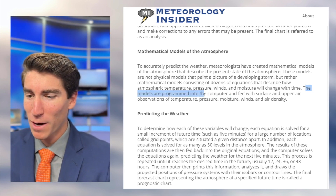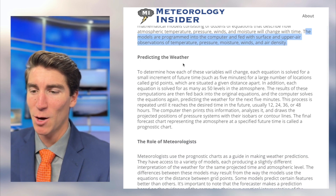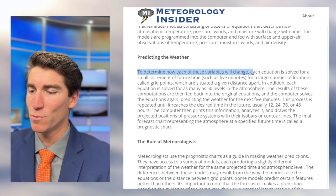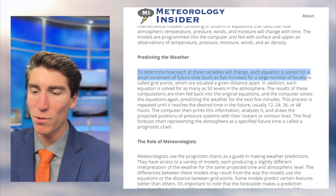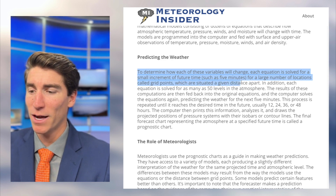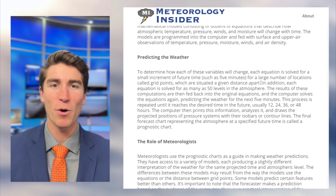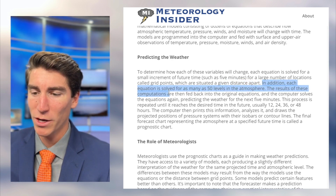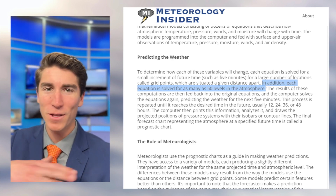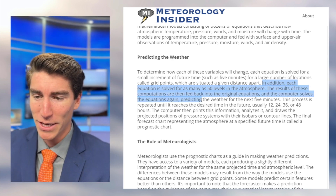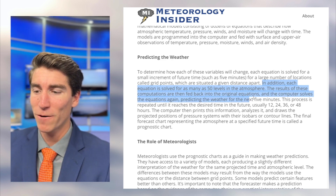The models are programmed into the computer and fed with surface and upper air observations of temperature, pressure, moisture, winds, and air density. To determine how each variable will change, each equation is solved for a small increment of future time — such as five minutes — for a large number of locations called grid points situated a given distance apart. You want both the time increment and the spatial increment to be as small as possible. Each equation is also solved for as many as 50 levels in the atmosphere — not just the surface, but all grid points going way up into the atmosphere.